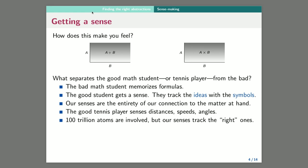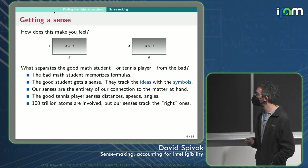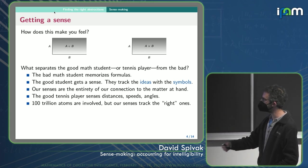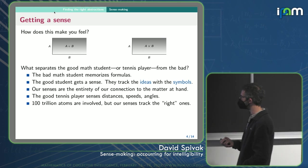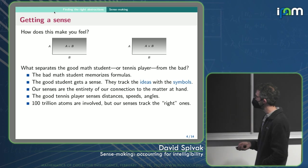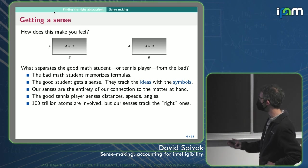So the bad math student memorizes formulas. They're trying to get an A also, but they're doing it wrong. Because they're trying to survive instead of trying to sense make. They are missing the point about getting a sense of it. But the good student gets a sense. They track the ideas with the symbols. So they have this accounting. They have this kind of tracking.